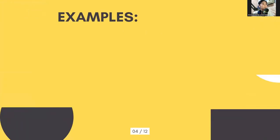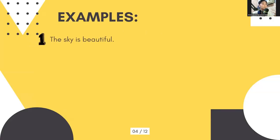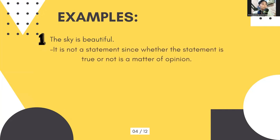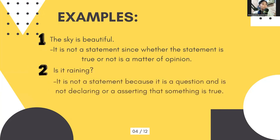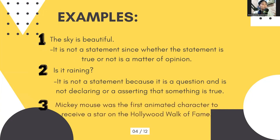Example. Number one: the sky is beautiful. It is not a statement since whether the sentence is true or not is a matter of opinion. Number two: is it raining? It is not a statement because it is a question and it's not declaring or asserting that something is true. And lastly, number three: Mickey Mouse was the first animated character to receive a star on the Hollywood Walk of Fame. And yes, the sentence is a true statement.